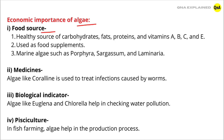Food Source: Algae is a healthy source of carbohydrates, fats, proteins, and vitamins A, B, C, and E. It is also used as food supplements. Marine algae such as Porphyra, Sargassum, and Laminaria are commonly consumed.